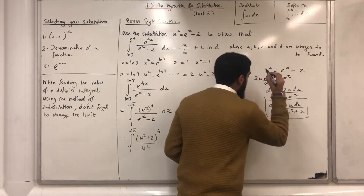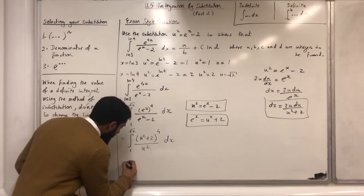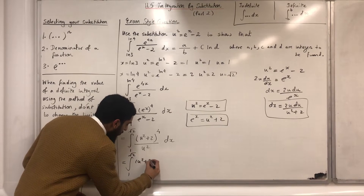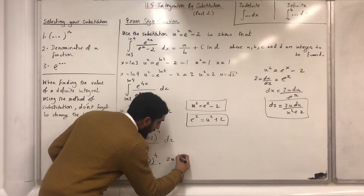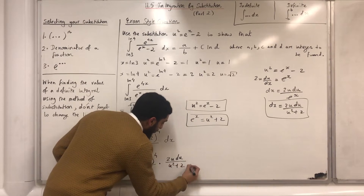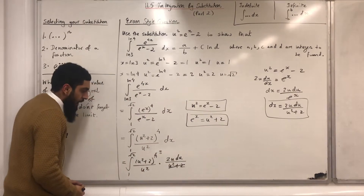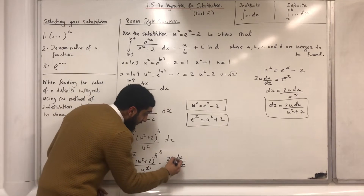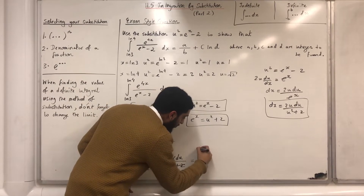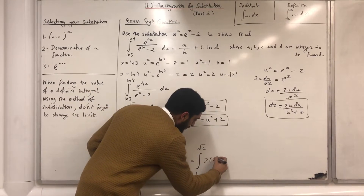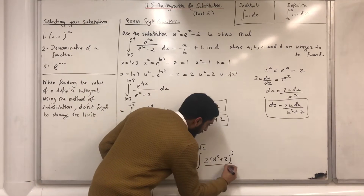The integral now reduces to the integral from 1 to √2 of (u² + 2)⁴ over u² multiplied by 2u du / (u² + 2). There's cancellation: the power 4 reduces to power 3, cancelling one (u² + 2), and the u² reduces by one u cancelling with the 2u. So the integral reduces to the integral from 1 to √2 of 2(u² + 2)³ over u du.